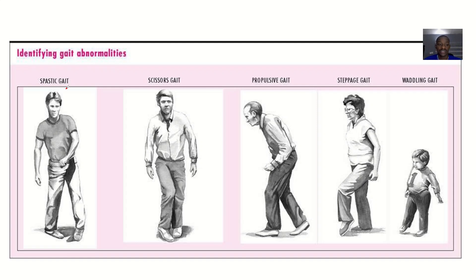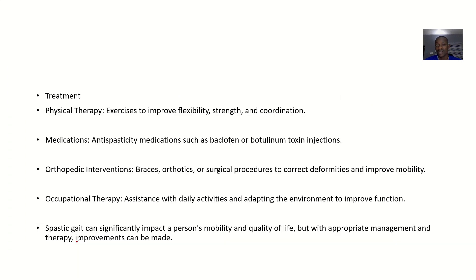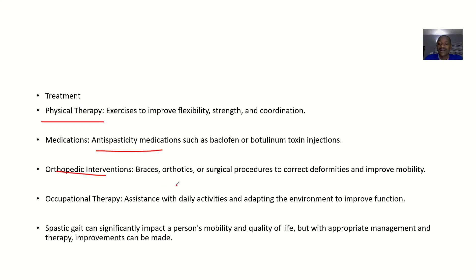To recap, spastic gait affects one side of the body. Treatment options include physical therapy — exercises to improve flexibility, strength, and coordination; medications such as anti-spasticity drugs like baclofen or botulinum toxin injections; orthopedic interventions like braces, orthotics, or surgical procedures to correct deformities and improve mobility; and occupational therapy to assist patients with daily activities and adapt the environment to improve function.